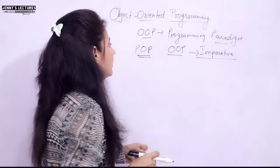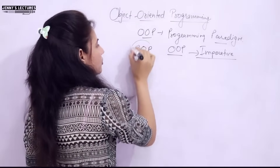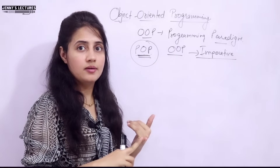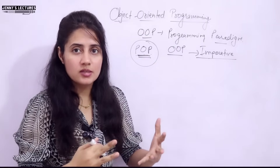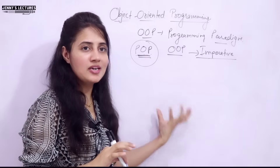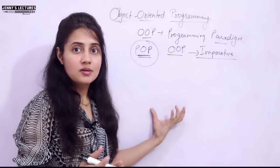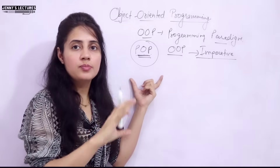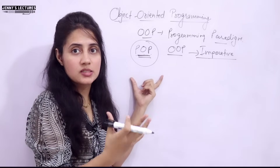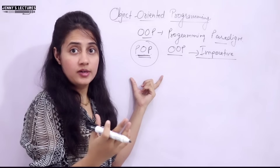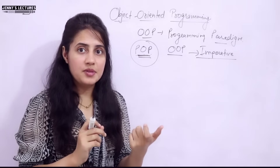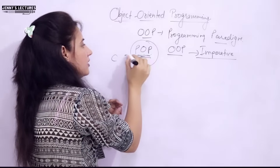Procedure-oriented programming, as the name suggests, means the program revolves around procedures — that is, how to do a particular task. In computer programming terms, we call that an algorithm. The main focus is on the algorithm, how to do the task, rather than what to do. Procedure and function are the same thing, and C comes under this category.